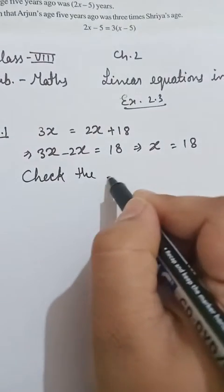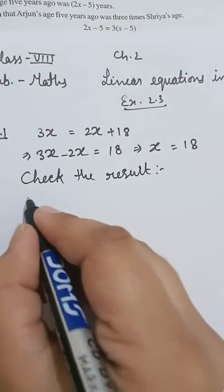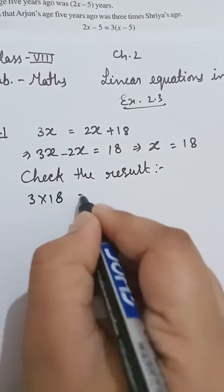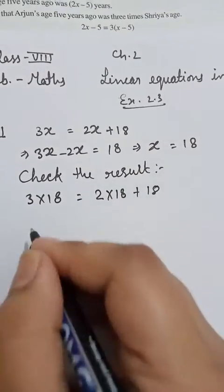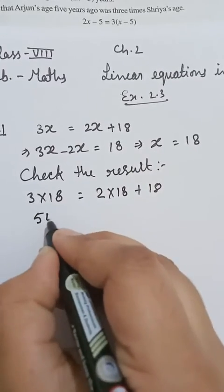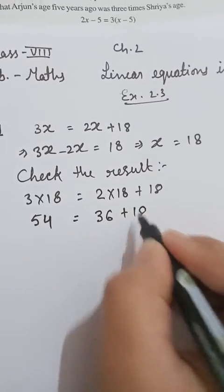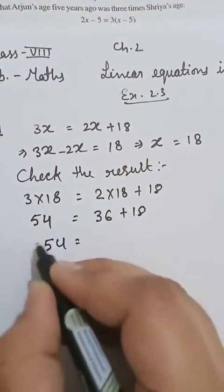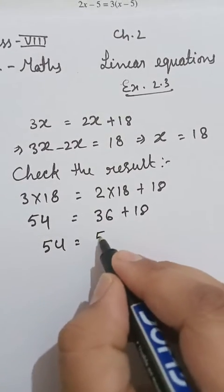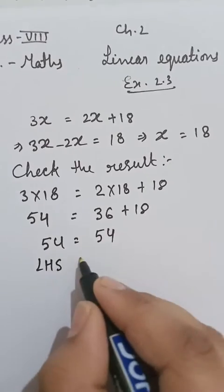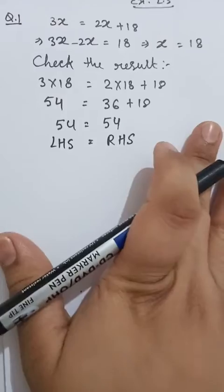Let's check the result. We substitute x = 18: LHS = 3 × 18 = 54. RHS = 2 × 18 + 18 = 36 + 18 = 54. So LHS equals RHS, the two sides are equal and the result is correct.